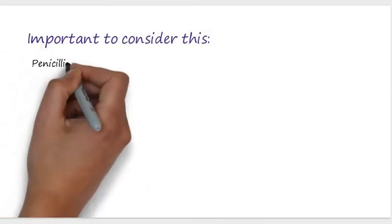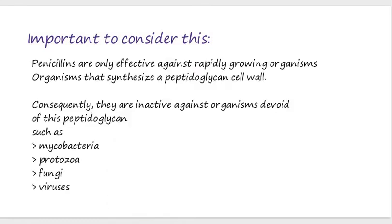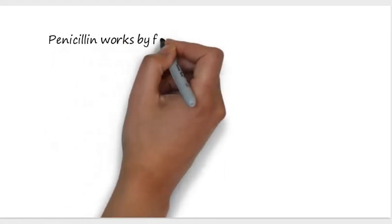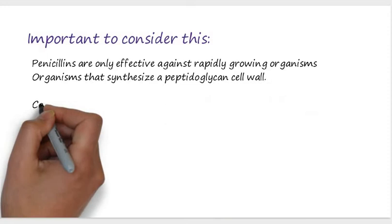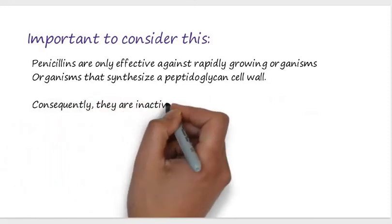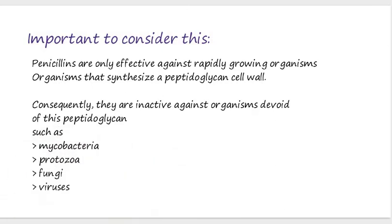Regarding the mechanism of action of penicillin, keep in mind that penicillin are only effective against rapidly growing organisms — that is, organisms whose cell walls are divided by peptidoglycans. Penicillin does not work against protozoa, fungi, viruses, or mycobacteria.